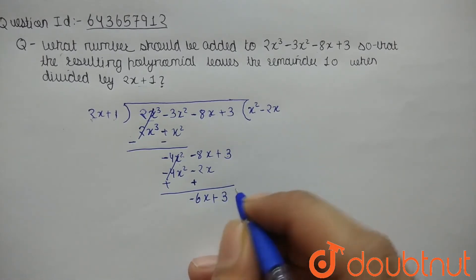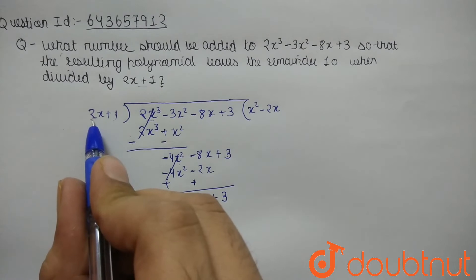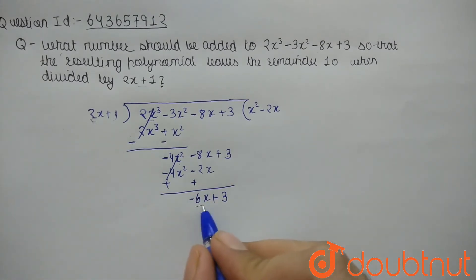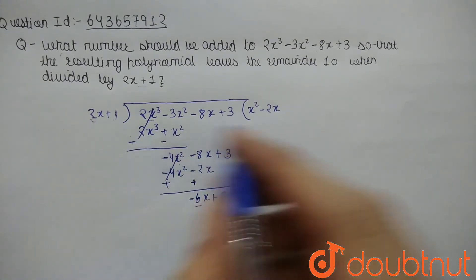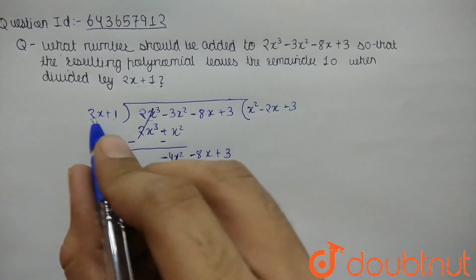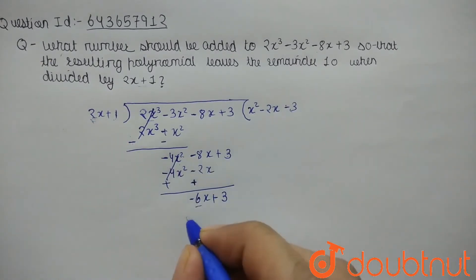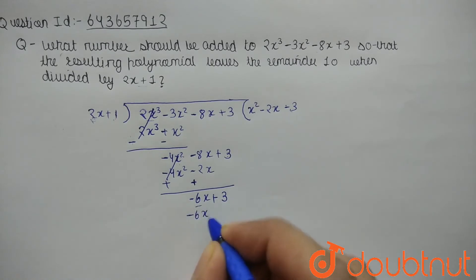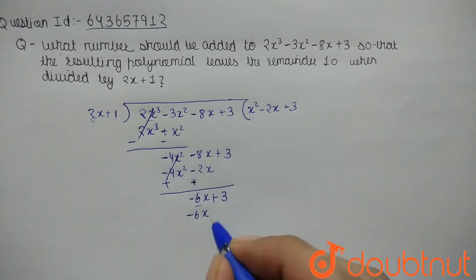So what should be added to 6 to make it 10? Obviously 4. So 4 should be added. -6x, and 1 into -3 is -3. So now sign will be changed, plus plus, cancelled out.